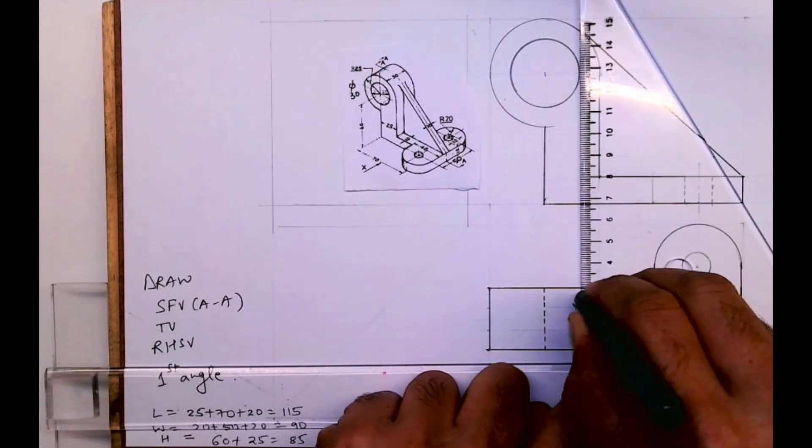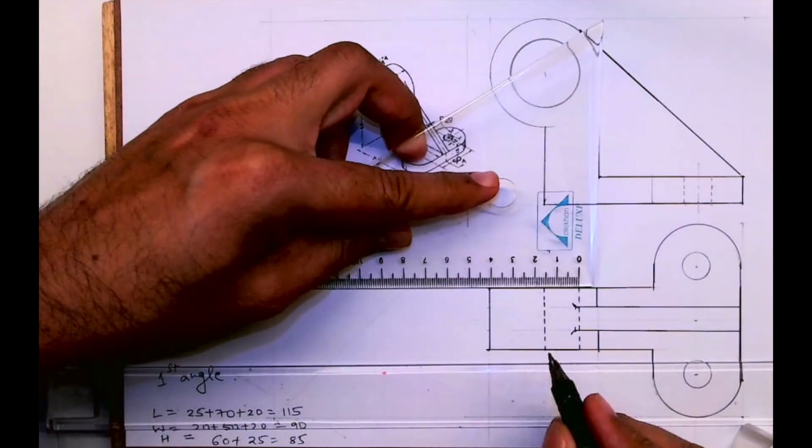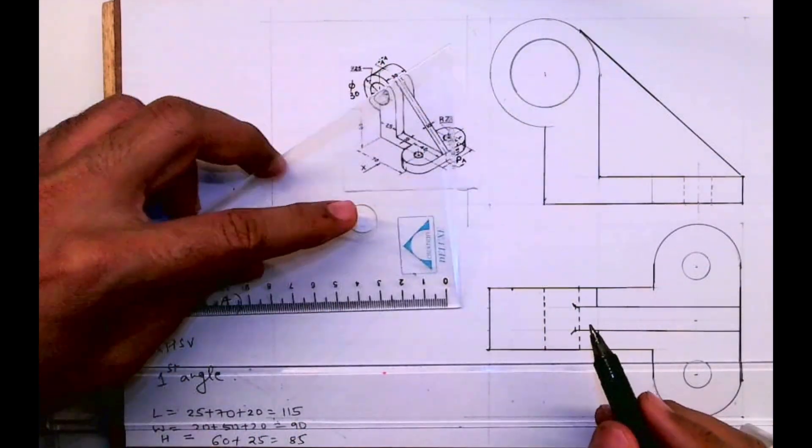Now draw dotted for circle. It is 15, 15 on both the side.